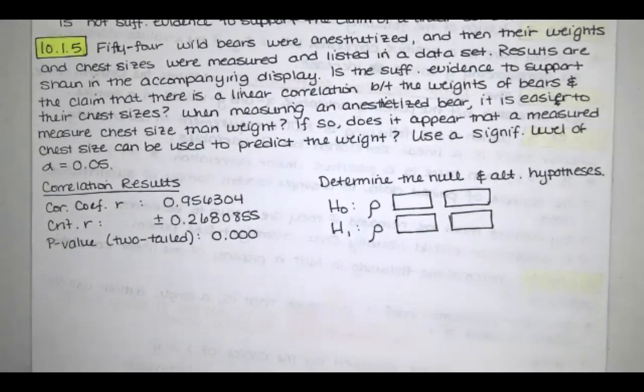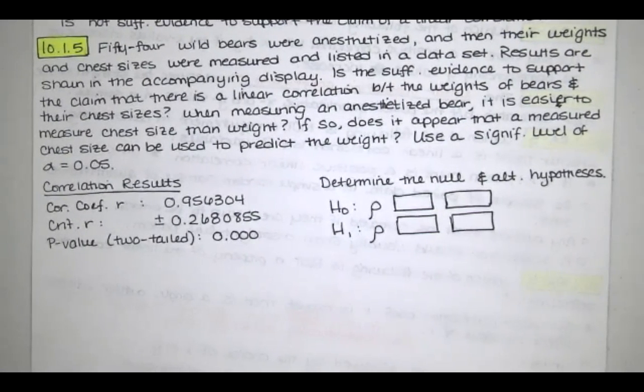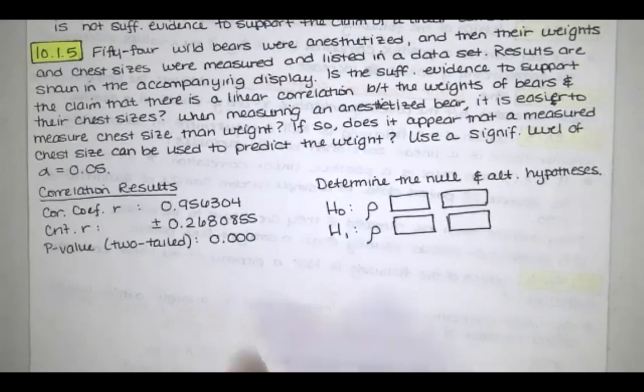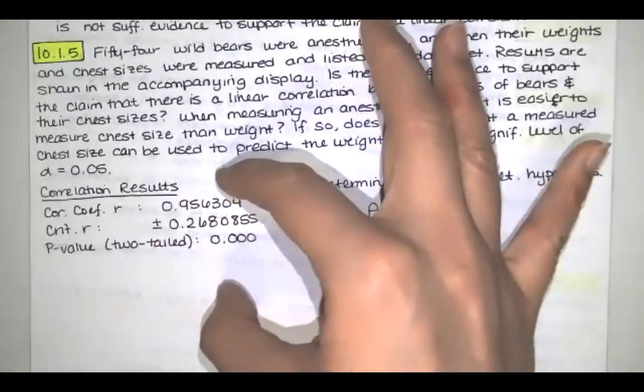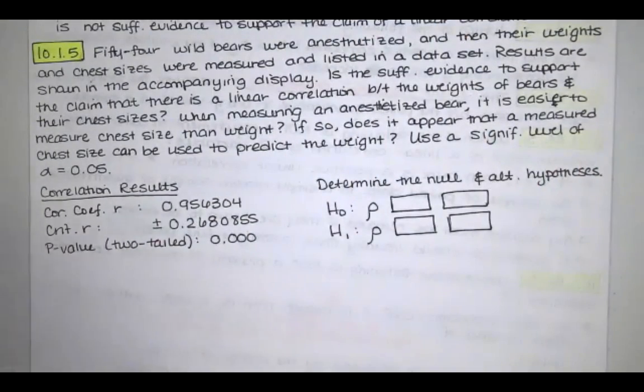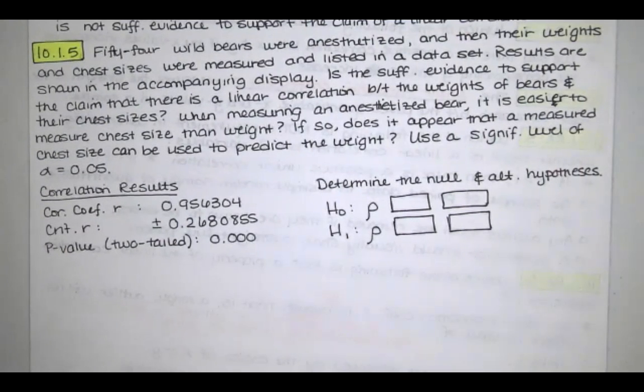In this video we solve problem 10.1.5 from Essentials of Statistics 6th edition by Mario Triola. The problem statement says 54 wild bears were anesthetized and their weights and chest sizes were measured and listed in a data set. Results are shown in the accompanying display. Is there sufficient evidence to support the claim that there is a linear correlation between the weights of bears and their chest sizes?